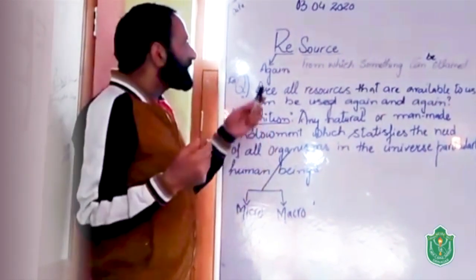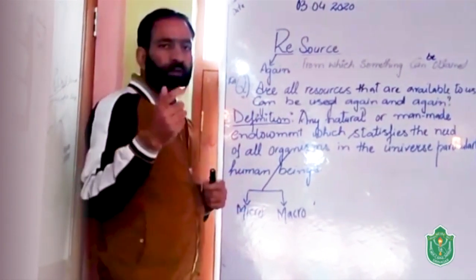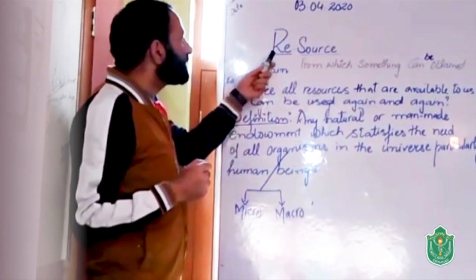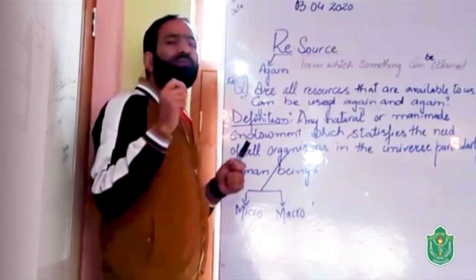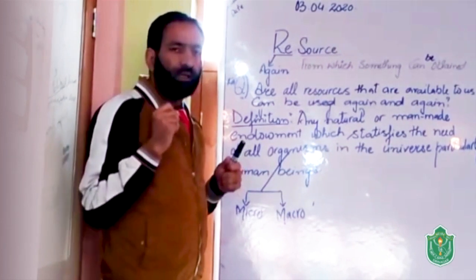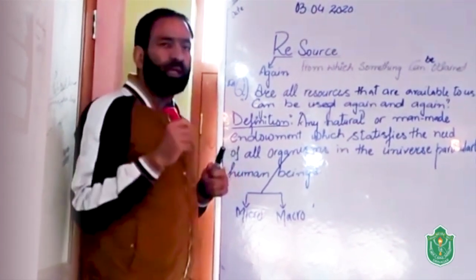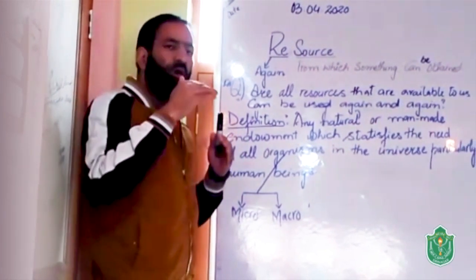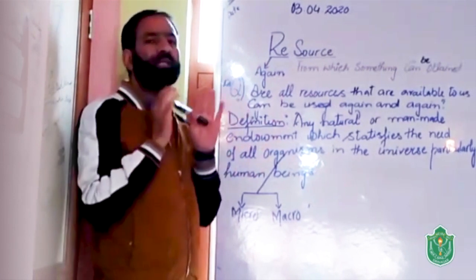Let me explain the cognitive meaning of the word resource. Resource starts with the word RE. Here you will find the word RE like reform, reinvent, rebirth. It means again or the thing which is in cyclic form or which completes a cycle.